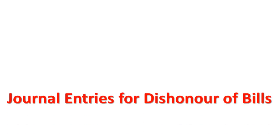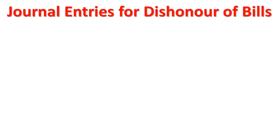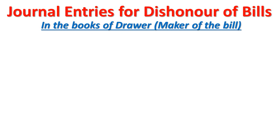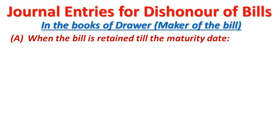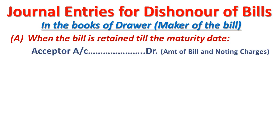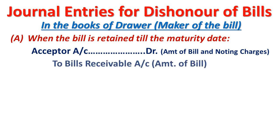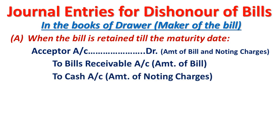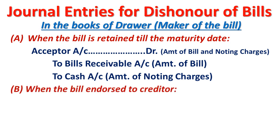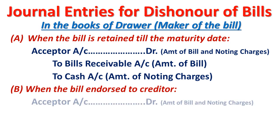Now we will understand the general journal entries for dishonor of the bill. In the books of the drawer, there are four situations — the same four situations as in the case of honor of the bill. Situation one: when the bill is retained till the maturity date, the entry is — Acceptor Account Dr. (drawee account) with the amount of bill plus noting charges, To Bills Receivable, To Cash with the amount of noting charges.